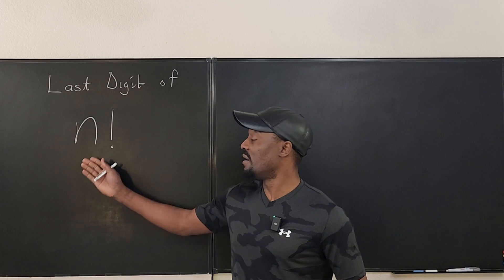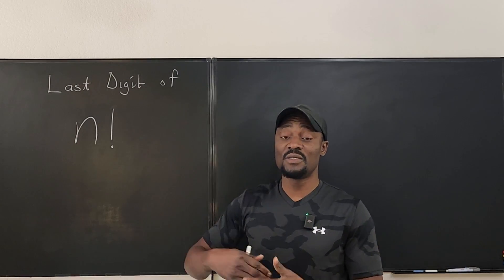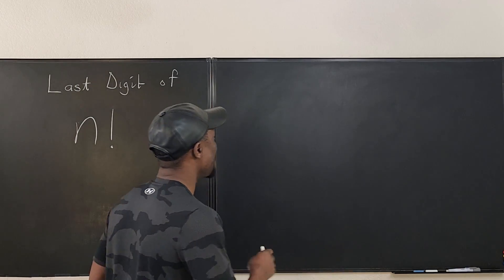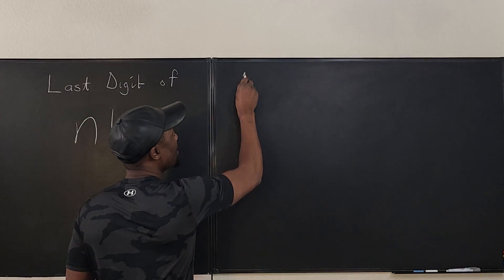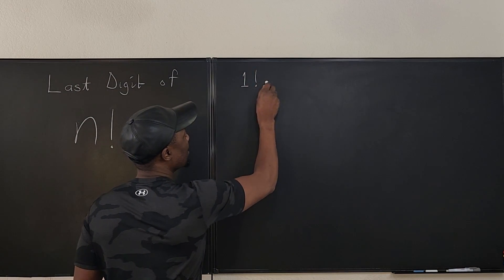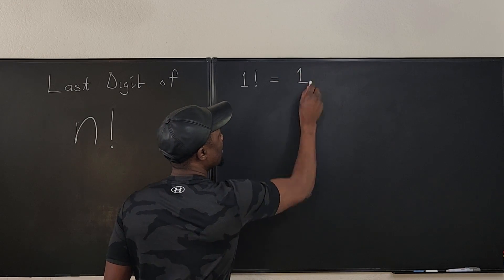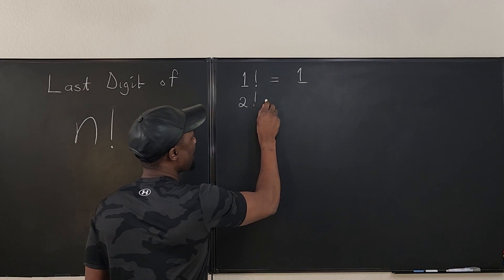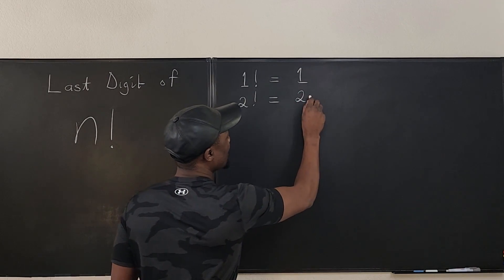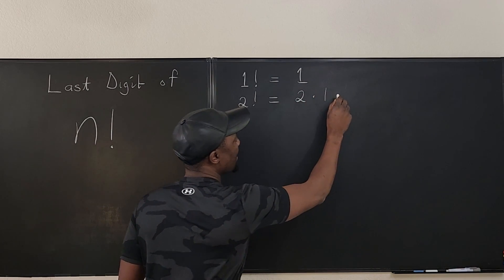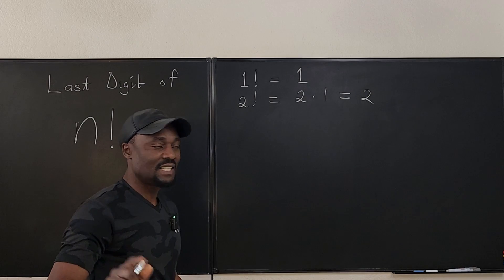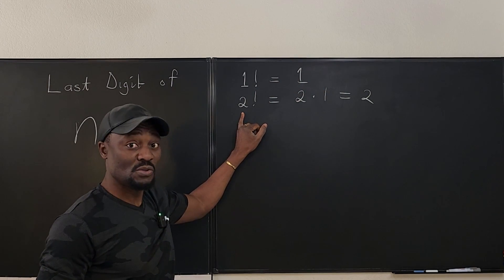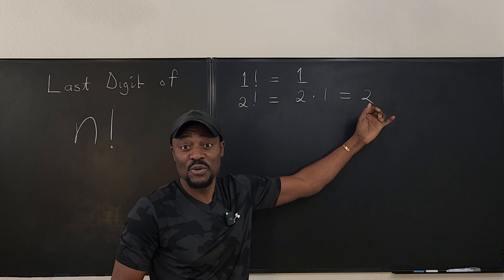Assuming you know what a factorial is, it is just the product in a descending or ascending order, depending on how you like it. We can say that one factorial is equal to one. Two factorial is equal to two times one, and the answer is two. So as you can see, the last digit of one factorial is one, the last digit of two factorial is two because there's only one digit.